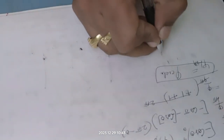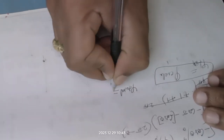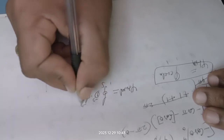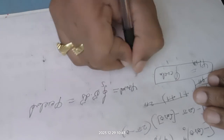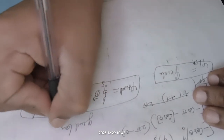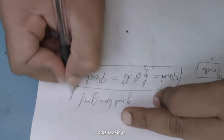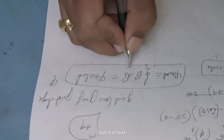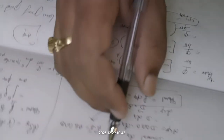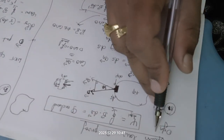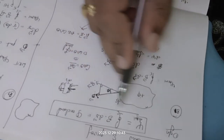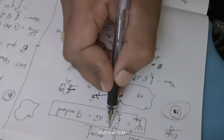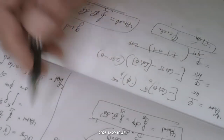Therefore psi-total equals the closed surface integral of D dot dS, which equals Q enclosed. This is the Gauss's Law proof for a point charge Q enclosed. From an examination point of view this is very important. Start with step one — prove psi-total equals the closed surface integral of D dot dS — then step two — prove that equals Q enclosed. Divide the proof into these two parts.